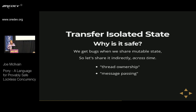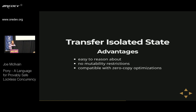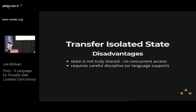But if even a single reference is retained in the original task — sometimes called a leaked reference — all safety goes out the window because both tasks have access to the same mutable state object at the same time. This method usually requires very strict discipline to avoid leaking references, or you need a language that enforces that no references are leaked. The advantages include no mutability restrictions and compatibility with zero-copy optimizations — for example, passing a byte buffer from task to task all the way through a processing chain without copying the data, just passing the pointer from task to task.